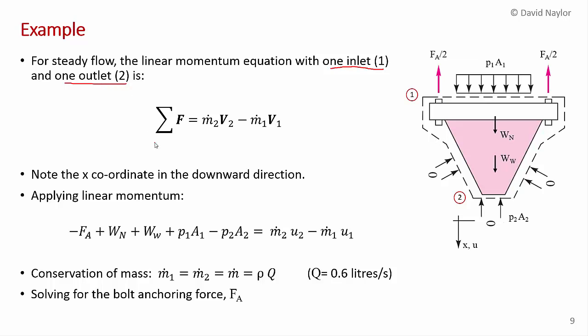So we get that the sum of the forces equals m-dot-2 V2, that's the momentum out, minus m-dot-1 V1, the momentum in. And you always got to keep in mind that these V's here, they're bolded, that they're vectors. And the forces are vectors.